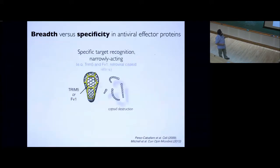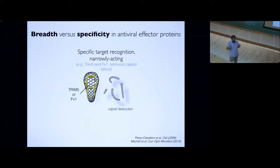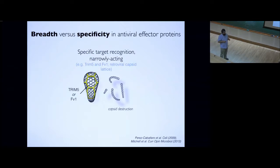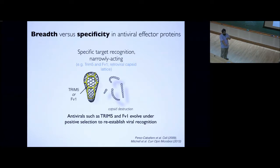In contrast, antivirals such as Trim-5-alpha are really effective against HIV but very specific — they work only against retroviruses. Here too we see positive selection, but it's all about reestablishment of viral recognition: viruses try to escape, Trim-5 tries to reestablish. So we have two classes: one broadly acting but not specific, the other specific but not broadly acting. MXA is actually unique because it's both specific and broadly acting — the only antiviral gene in all of biology known to have solved this biophysical conundrum in a manner we don't yet understand.